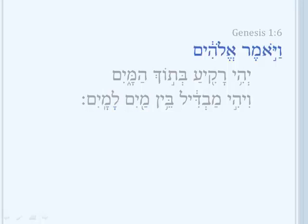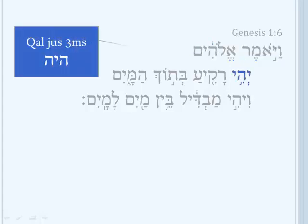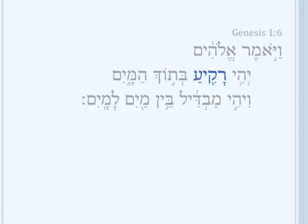Vayomer Elohim starts the second day as it started the first day. Yahi is a kaljasev 3MS from Hey, Yod, Hey — meaning 'let there be.'